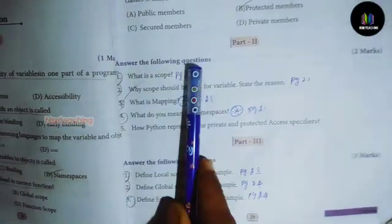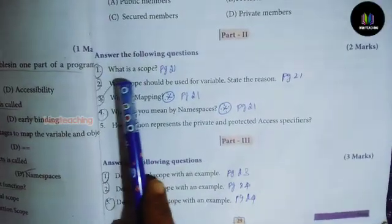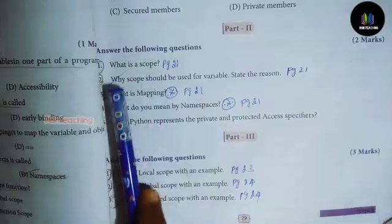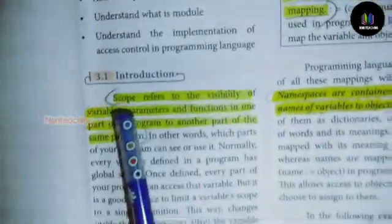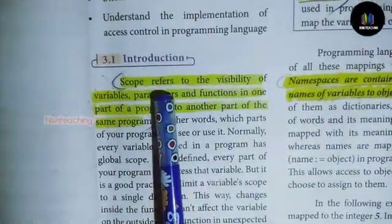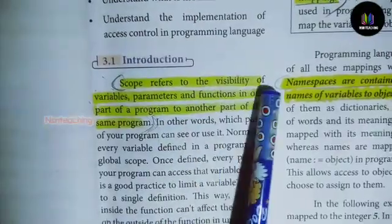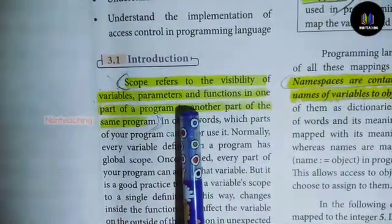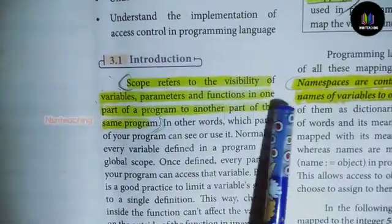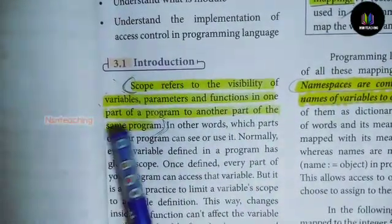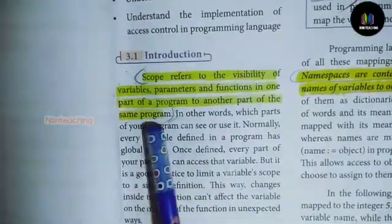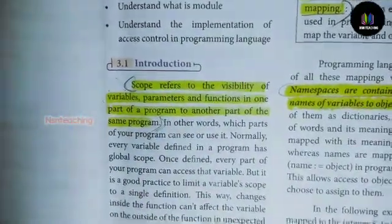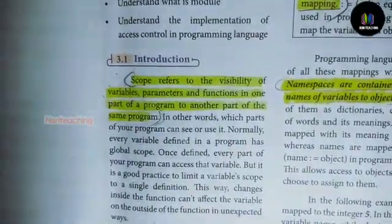Answer the following questions. First one: What is scope? Scope refers to the visibility of variables, parameters, and functions from one part of a program to another part of the same program.